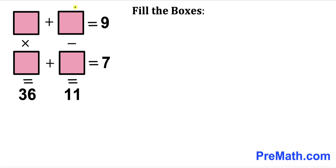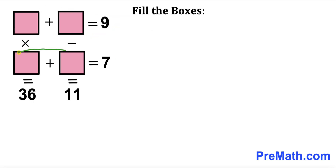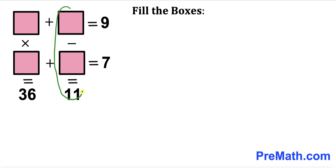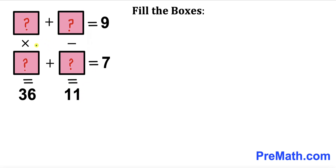In this video we have an array of empty boxes such that the sum of the two horizontal boxes is equal to 9, the sum of the two bottom horizontal boxes is equal to 7, the product of the two vertical boxes is equal to 36, and the difference of these two boxes is equal to 11. Our task is to fill these empty boxes with appropriate values.